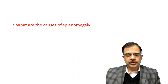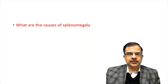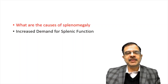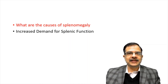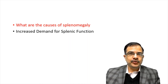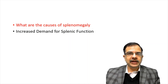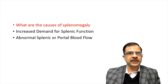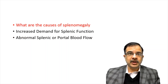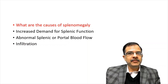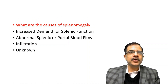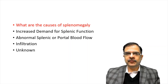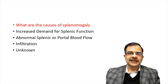What are the causes of splenomegaly? We can classify these into four groups. The first cause is increased demand for splenic functions — like in hemolytic anemia or immune dysregulation causing the spleen to enlarge. Second can be congestion of the spleen due to increased portal blood flow, like in portal hypertension. Third is infiltration of the spleen, and fourth is some unknown mechanism. If we tell the examiner these points, even if we can't recall all etiologies, we are through.